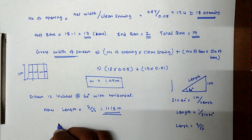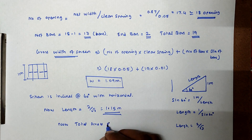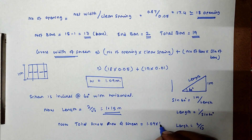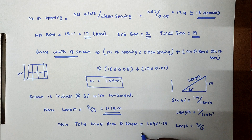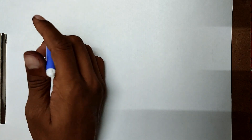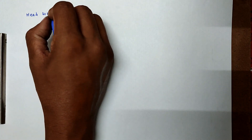The total gross area of the screen equals width × length: 1.09 × 1.15 = 1.2 m².